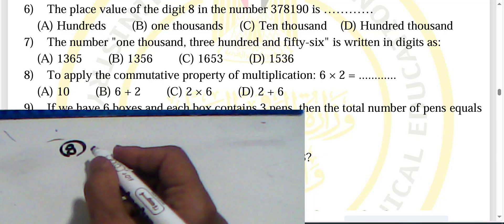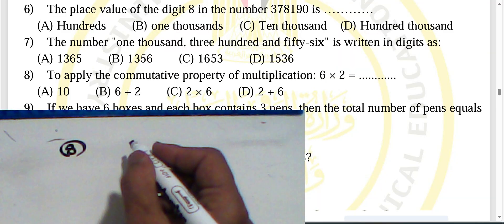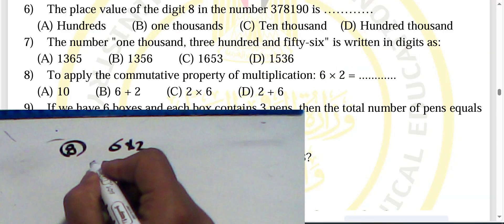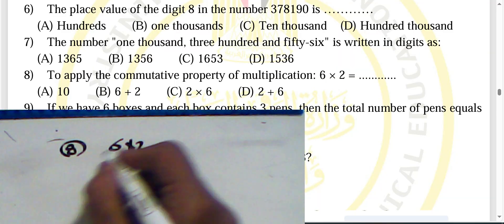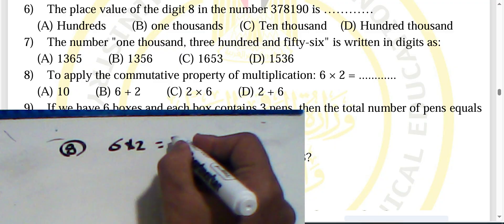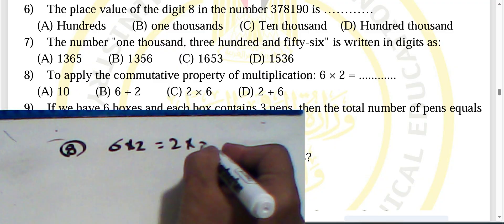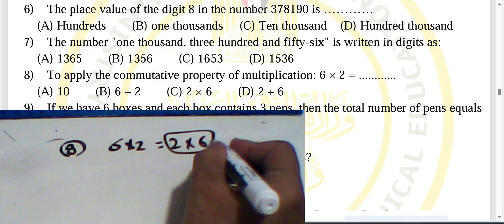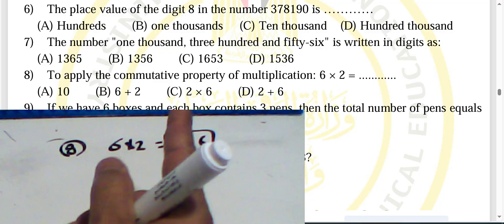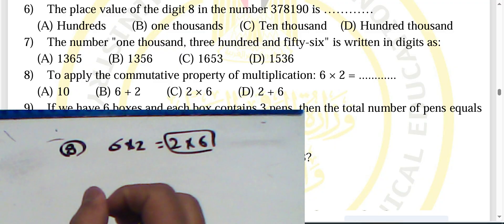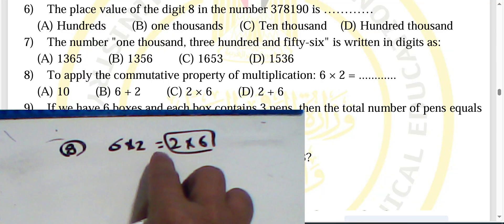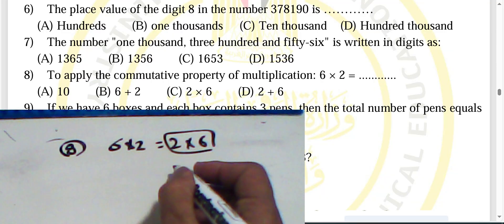Question eight: to apply the commutative property, six times two becomes two times six. The commutative property means we swap the two digits — choose letter C.